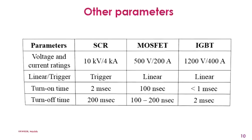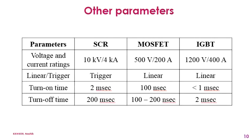Now we will see a few more parameters that differentiate these devices. The voltage and current ratings of SCR, MOSFET, and IGBT are shown here. SCR is a triggering device whereas MOSFET and IGBT are linear devices. The turn-on time for SCR is 2 ms, for MOSFET it is 100 ns, and for IGBT it is less than 1 ms. The turn-off time for SCR is 200 ms, for MOSFET it is 100 to 200 ns, and for IGBT it is 2 ms.